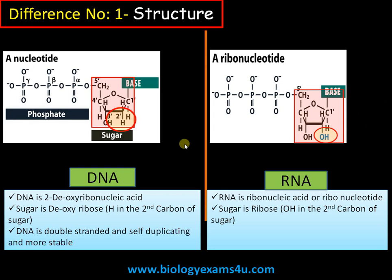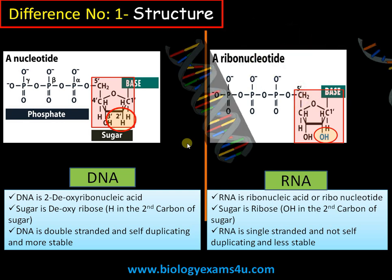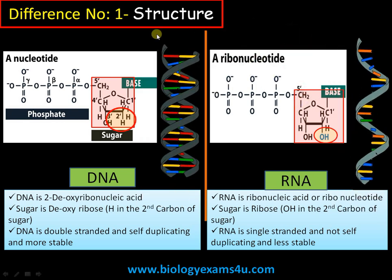DNA is double stranded, self-duplicating, and comparatively more stable, whereas RNA is single stranded, not self-duplicating, and is less stable. The stability of DNA is due to the hydrogen at the second carbon position, whereas in RNA there is a hydroxyl group at the second position, which is more reactive, making RNA less stable compared to DNA.